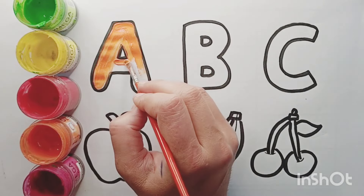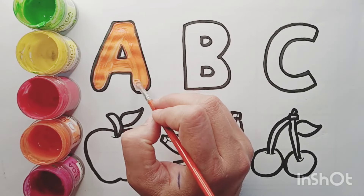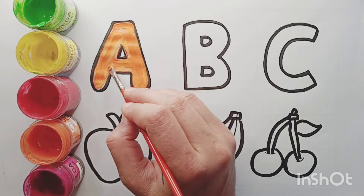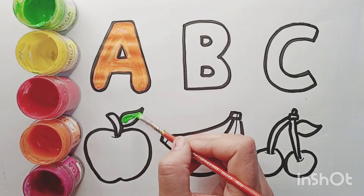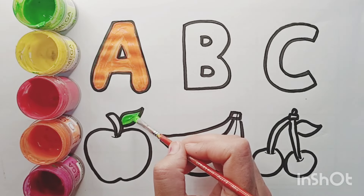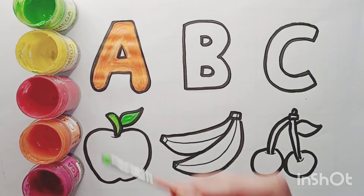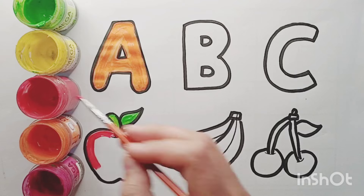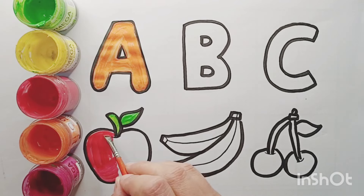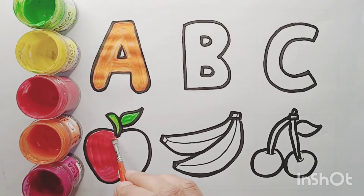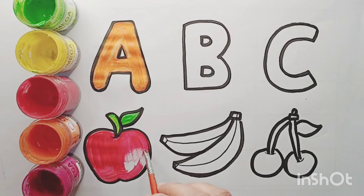A, B, C, D, E, F, G, H, I, J, K, L, M, N, O, P, Q, R, S, T, U, V, W, X, Y, and Z. Now I know my ABCs. Next time won't you sing with me?